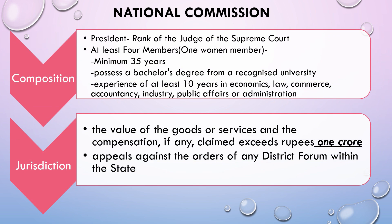Next is the National Commission. The President must be a person of the rank of Judge of the Supreme Court — one who is capable of becoming a Judge of the Supreme Court can become President of the National Commission. It must have at least four members, among which one should be a woman member. The remaining qualifications are similar to that of State and District Commissions. The jurisdiction here is: if the value of goods or services and the compensation claimed exceeds Rs. 1,00,00,000 (1 crore), then one has to approach the National Commission. Appeals against the orders of any District Forum or State Commission can also be made to the National Commission.